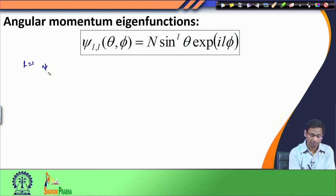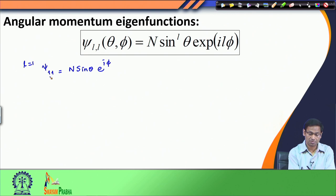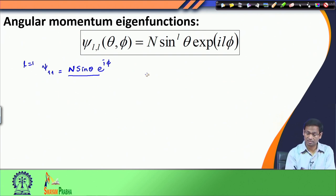For l equals 1, psi_11 is N times sin(theta) times e^(i*phi). Here I have used l equals 1 in this expression to get this functional form. Again, I do not know what N is — that is what I am trying to get — and I will do that by normalizing this function.